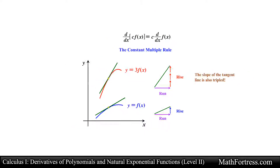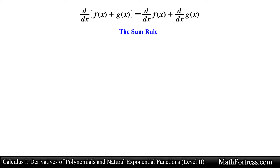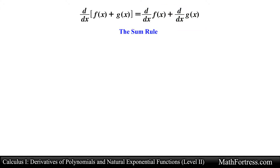The next rule is the Sum Rule. This rule states that the derivative of a sum of functions is the sum of the derivatives. In other words, you take the derivative of each function one by one. The Sum Rule can also be denoted using prime notation: the quantity (f + g)′ equals f′ + g′.